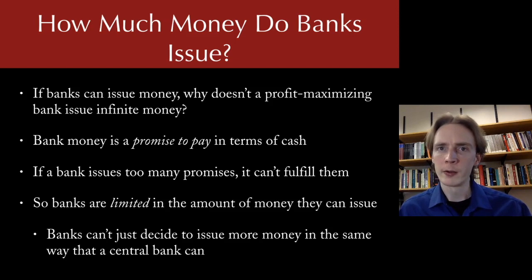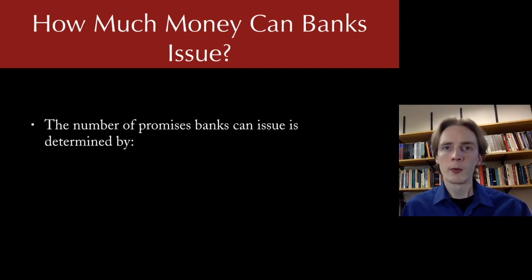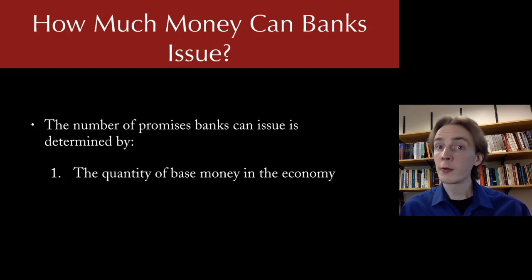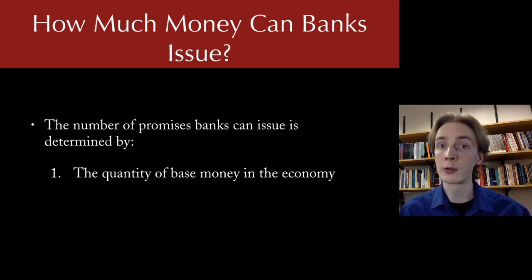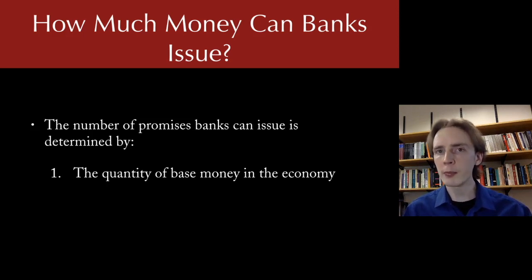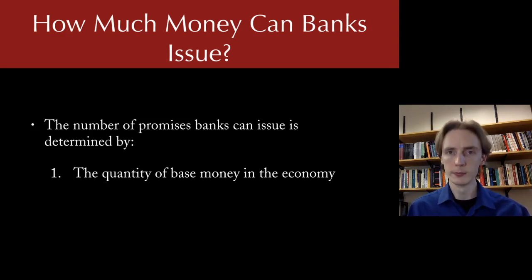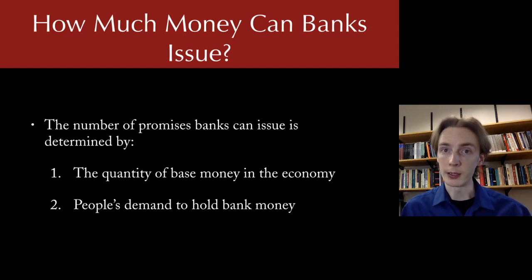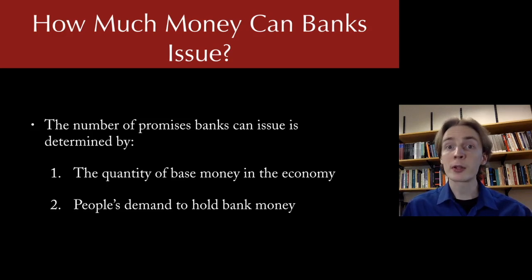So what determines how much money private banks can issue? Basically two factors. First, the more base money there is in the economy, the more promises banks can issue in total — the more funds available to make promises, the more able they are to make them. The second factor is people's demand for money. The more people are willing to accept bank promises and not call those in, the more able banks are to issue those promises without worrying about fulfilling them.